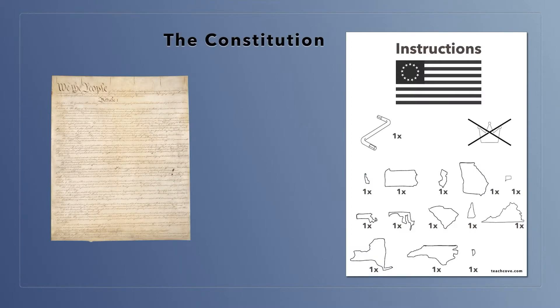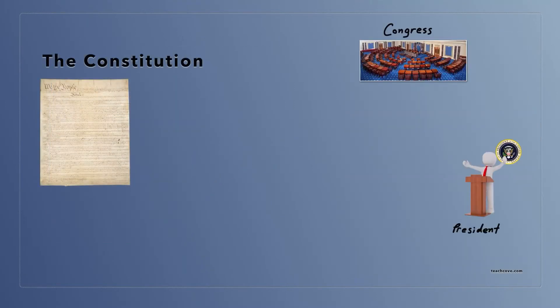The Constitution was written when the United States was born. It is really the instructions for how the country works. It explains the rules for how the government should work. The Constitution explains that part of the government will be the courts. The Constitution says that the courts are one of the three parts of government.